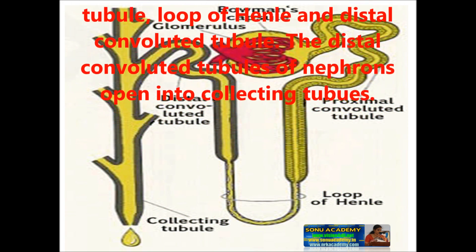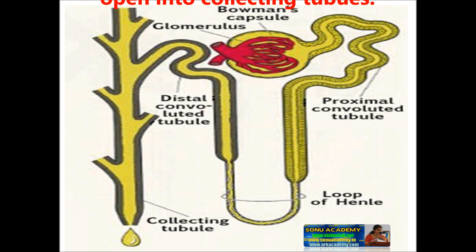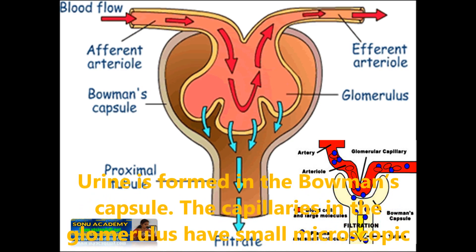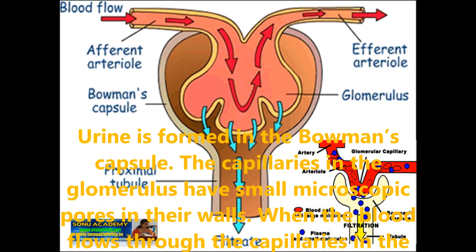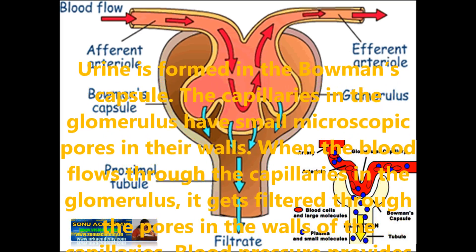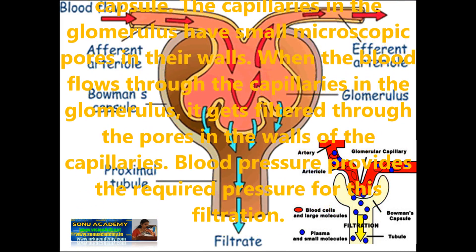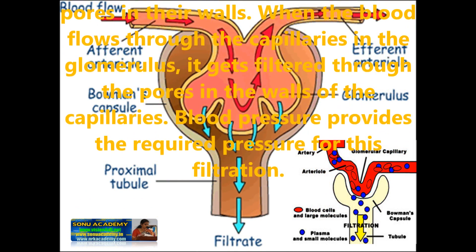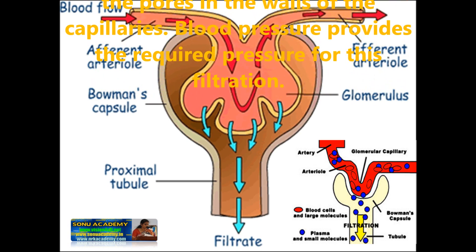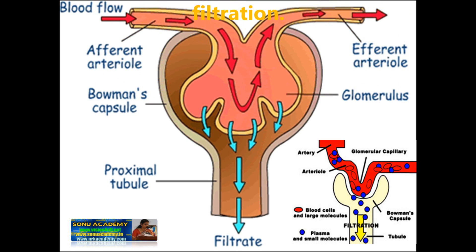The distal convoluted tubules of nephrons open into collecting tubules. Urine is formed in the Bowman's capsule. The capillaries in the glomerulus have small microscopic pores in their walls. When blood flows through these capillaries in the glomerulus, it gets filtered through the pores in the walls of the capillaries. The blood pressure provides the required pressure for this filtration.